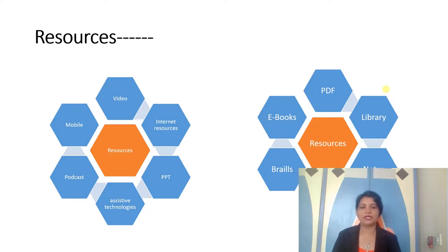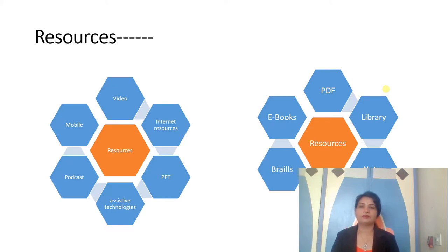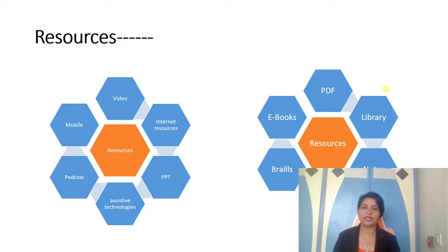In the second group: ebooks — various types of ebooks are available on the internet. Library material — you can collect some library material, some books from the library, and some related content from encyclopedias or journals. Whatever related content is available in the library, you have to collect it, bring it to the classroom, and provide it to your learners while teaching.